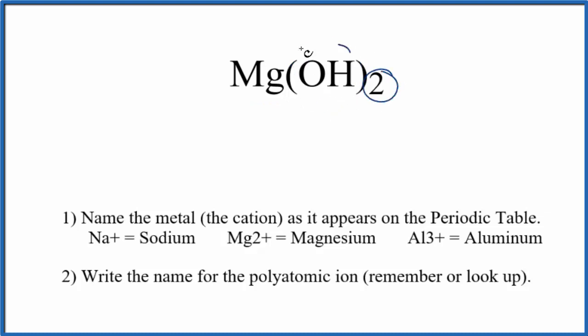We have two hydroxide ions. Magnesium, that's a metal. So we have this metal and these non-metals here, the polyatomic ion and the hydroxide ion here. Metal and non-metals, this is an ionic compound.